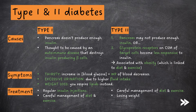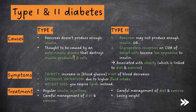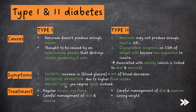We should know about type 1 and type 2 diabetes, including the causes, symptoms and treatment. Type 1 diabetes occurs when the pancreas does not produce enough insulin, and is thought to be caused by an autoimmune disease that destroys insulin-producing beta cells. Symptoms include thirstiness because the concentration of blood glucose increases so the water potential of the blood decreases, excessive urination due to higher fluid intake, and weight loss because the body respires more lipids instead. Treatment includes regular insulin injections and careful management of diet and exercise.